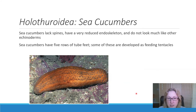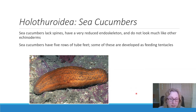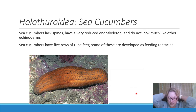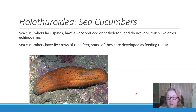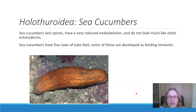Sea cucumbers look like a cucumber — that's why they're called sea cucumbers. Some people eat them, especially around the Galapagos where there is a lot of fishing for sea cucumbers. They don't really look like the other echinoderms and don't have spines, but they do have the little tube feet that the rest of the echinoderms have, and they have deuterostomic development. DNA shows that they do belong with the echinoderms and are not a separate group, as was thought many decades ago before we had DNA.